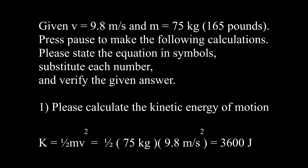Here are some calculations for a vaulter who starts with a speed of 9.8 meters per second and has a mass of 75 kilograms. Press pause to make the following calculations. Please state the equation in symbols, substitute each number, and verify the given answer. Question 1: calculate the kinetic energy of motion, K equals one half mv squared, and verify that we get 3600 joules. This is the kinetic energy of motion that the vaulter had while running on flat ground.